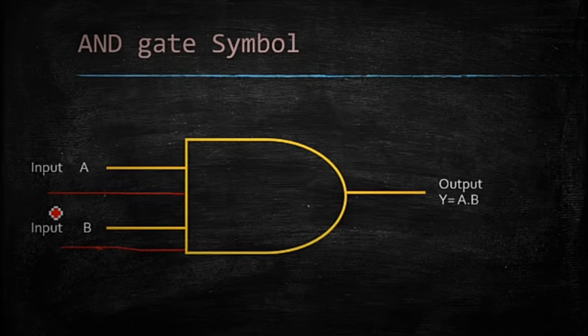If there are many inputs, let these all be the inputs. Let this is B input, this is C and this one is D and this one is N, up to N. There are N inputs. Then what will be the output? Output will be A dot B dot C dot up to N.